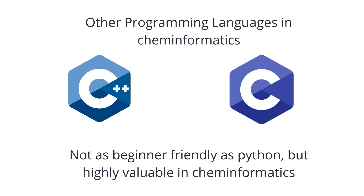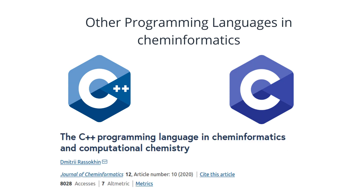Other programming languages that play a special role in modern scientific software development are the high-level programming languages such as C and C++. These play a special role because of their speed. Running molecular dynamics simulations and computational chemistry in general is really computationally expensive — running microsecond simulations can take weeks, and depending on the size of the system you're studying, maybe even more than weeks. So having a program that can run many complex calculations really fast is crucial, which is why most docking programs are also written in C or C++.